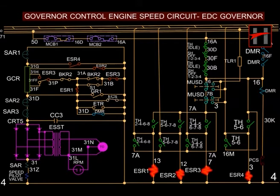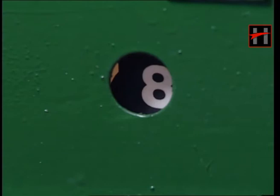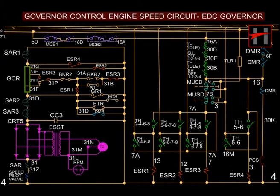Eight combinations of resistances are obtained as the throttle is moved from notch 1 to notch 8. The governor speed coil is balanced by 475 mA of current. Whenever the current increases above 475 mA, the engine RPM is increased. Similarly, when the current dips below 475 mA, the engine RPM is decreased. This is achieved by the GCR, which always ensures 475 mA of current by varying resistance as per the notch position as shown in the chart.